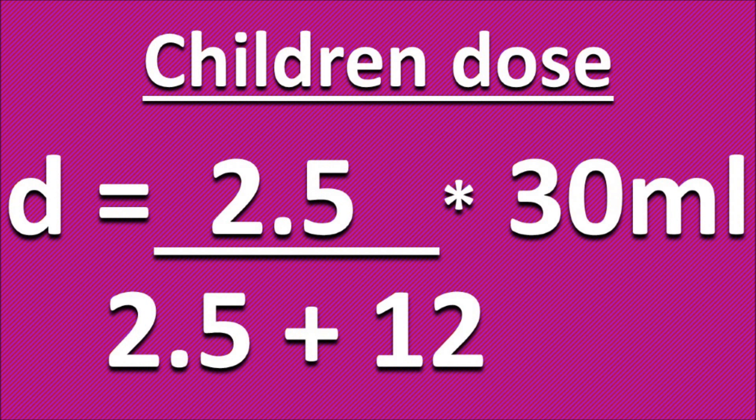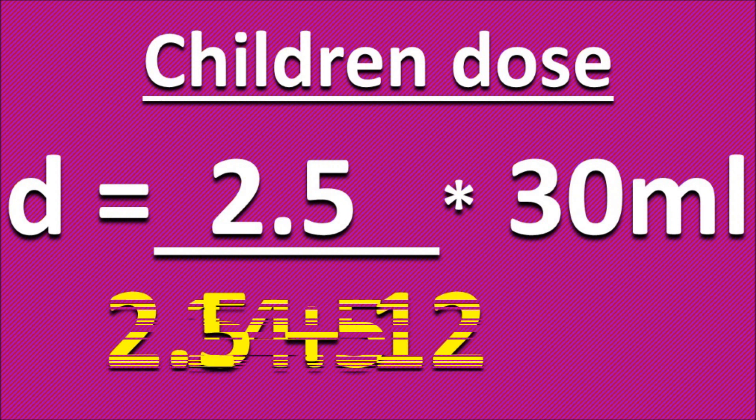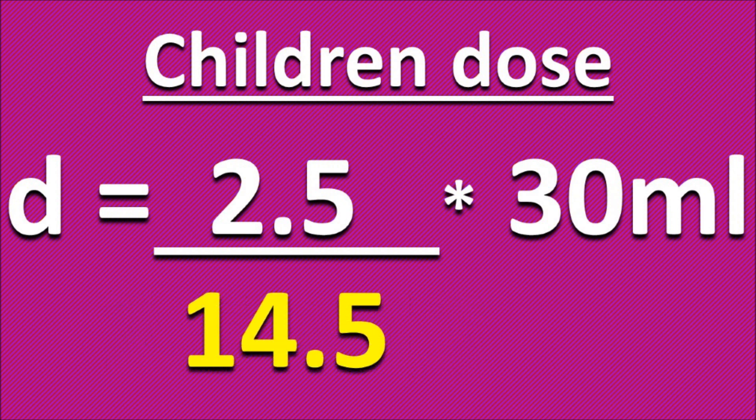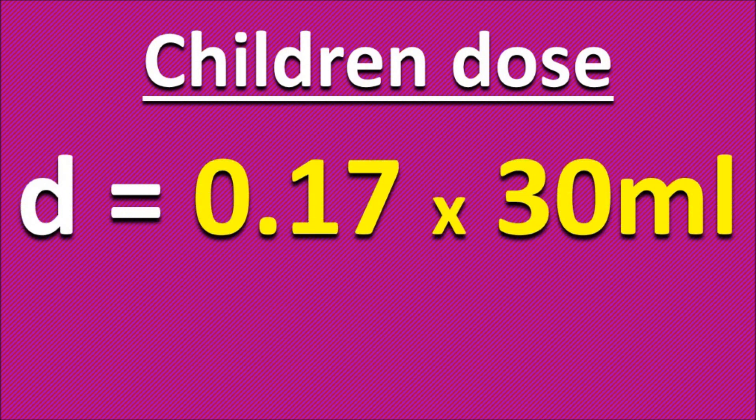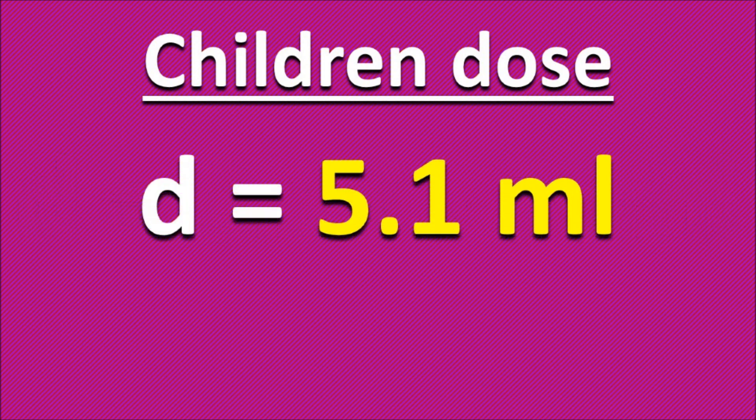And now that we've plugged in all the variables, we're going to begin to solve. 2.5 plus 12 is 14.5. We're going to go ahead and divide this fraction, and it's going to give us a decimal, 0.17, and we're going to multiply that into the 30 milliliters, which gives us 5.1 milliliters.